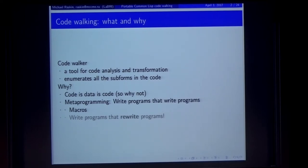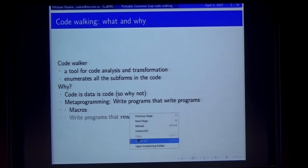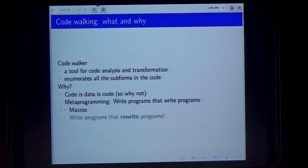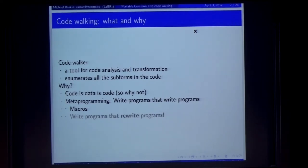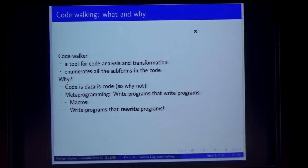More seriously, there are macros as part of our culture of programming. The idea of macros is to write programs that write programs. On the other hand, if we want to write programs that rewrite programs, we may want to have better abstractions to base our rewriters upon. Because when you just have a macro, it gives you all the hooks into the compiler process, but it doesn't give you almost anything for understanding the code you are processing. So if you want to rewrite this code in some way, you may want to have code walking.